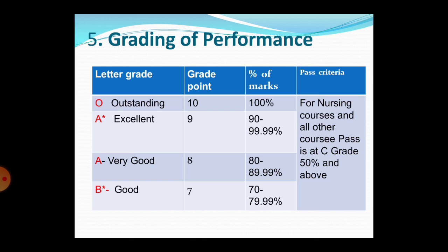The final point is grading of performance. You no longer have first class, distinction, or second class. Based on the percentage of marks, grade points are assigned and a grade is awarded. O means outstanding — 100% of marks — and the grade point is 10.